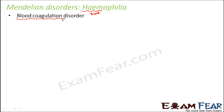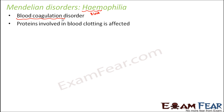Why does this disorder happen? Due to the reduced activity of coagulation factors. There are various proteins which act as coagulation factors and help in coagulation. When their activity gets reduced, coagulation will not happen properly. So in this disorder, a particular protein in the group of proteins responsible for clotting gets affected due to some issues in the genetic arrangement, and therefore clotting doesn't happen properly.